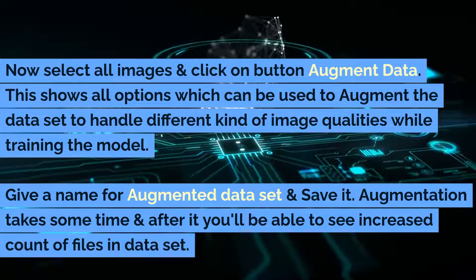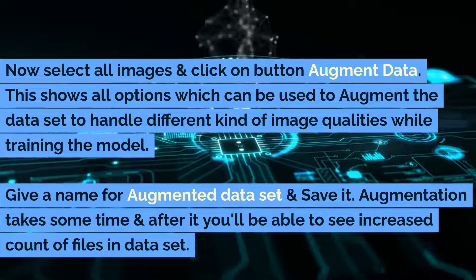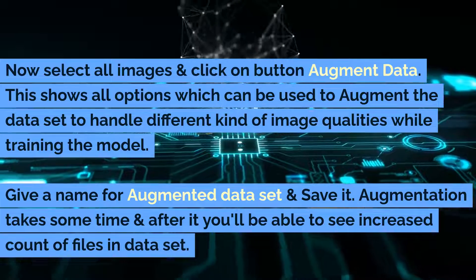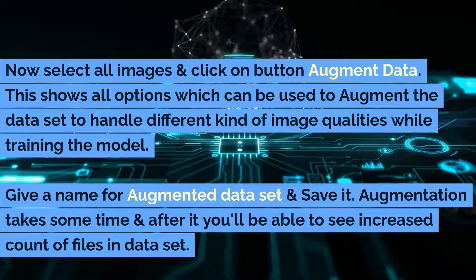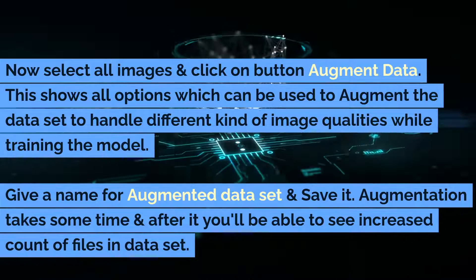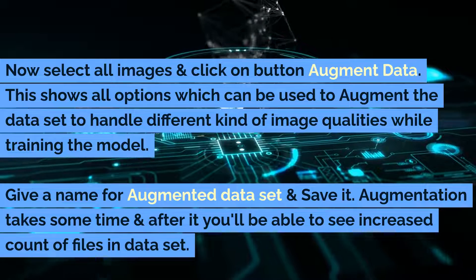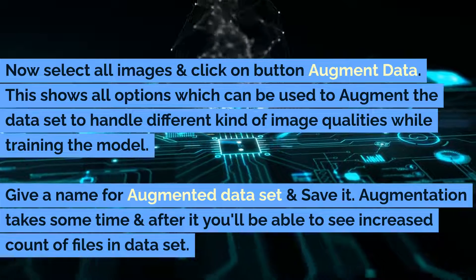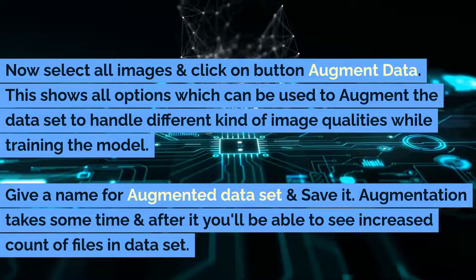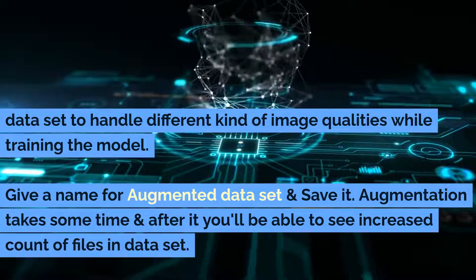Select all images and click the Augment Data button. This shows all options which can be used to augment the dataset to handle different kinds of image qualities while training the model. Give a name for the augmented dataset and save it. Augmentation takes some time, and after it you'll be able to see an increased count of files in the dataset.